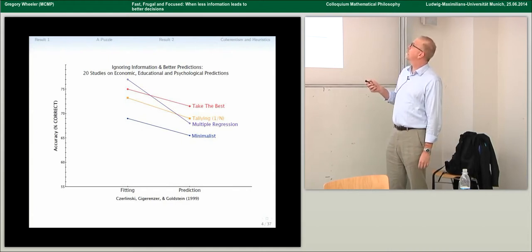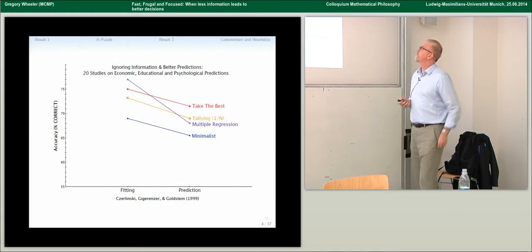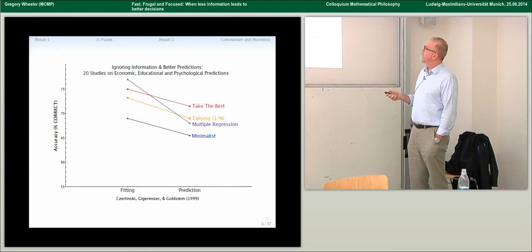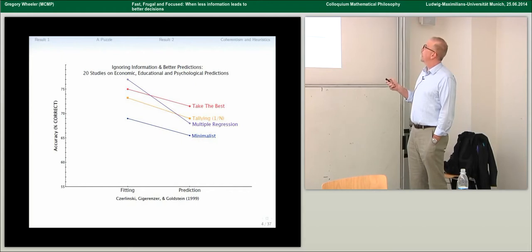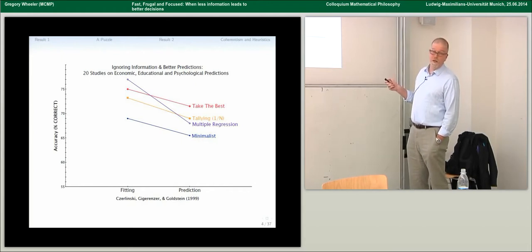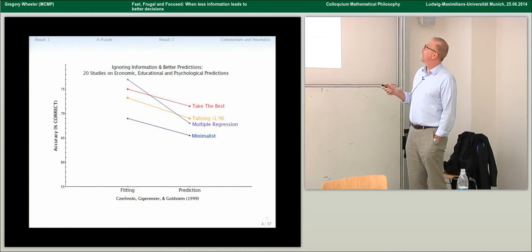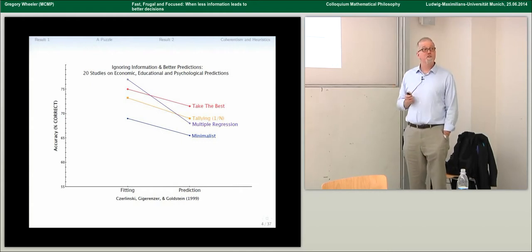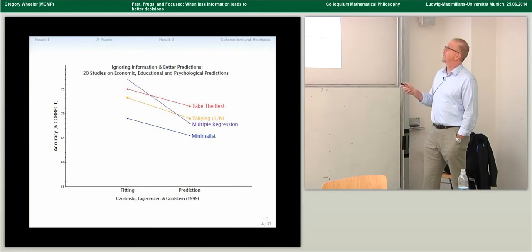The accuracy ranges from 55 to around 78 percent. Multiple regression, as you would expect, performs best when fitting data — it scored around 78 percent. The two heuristics don't perform very well in the fitting condition. But the interesting thing is you get this crossover effect, and this is why I got interested in this topic.